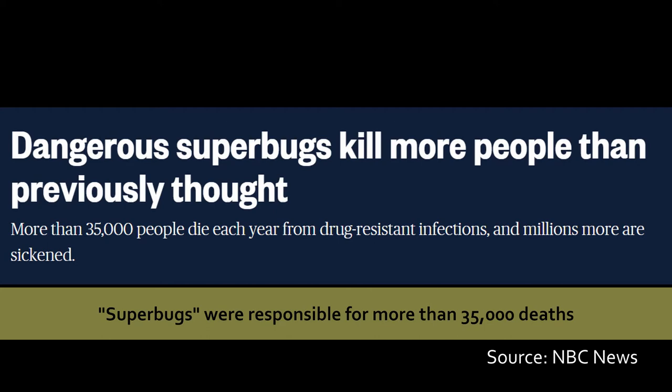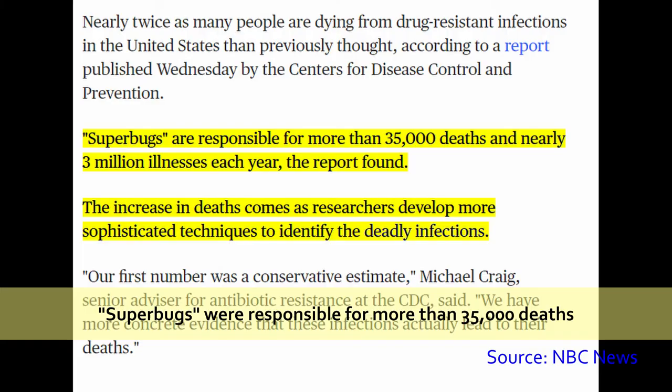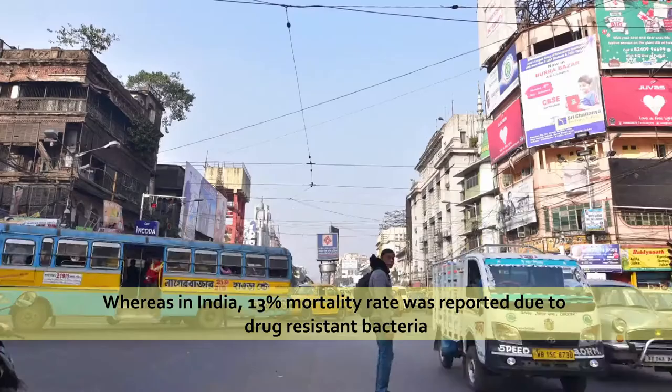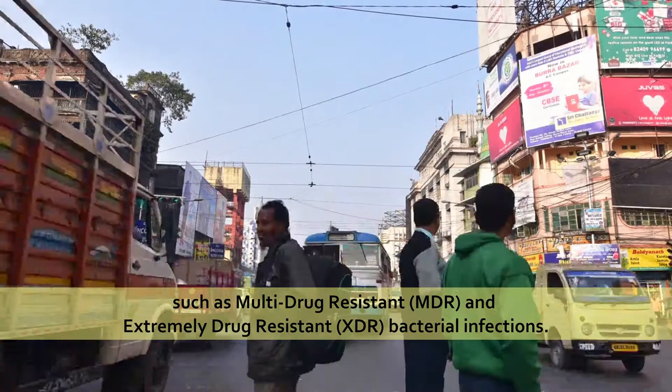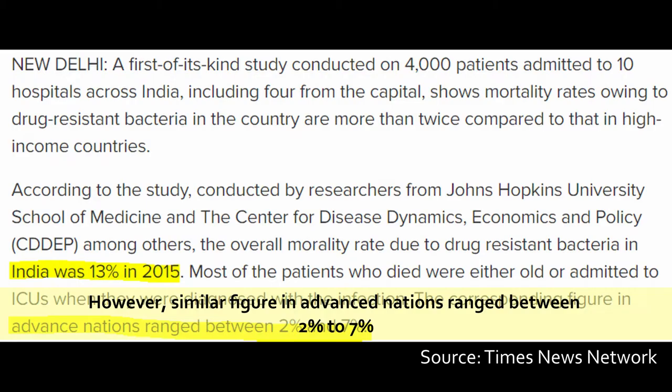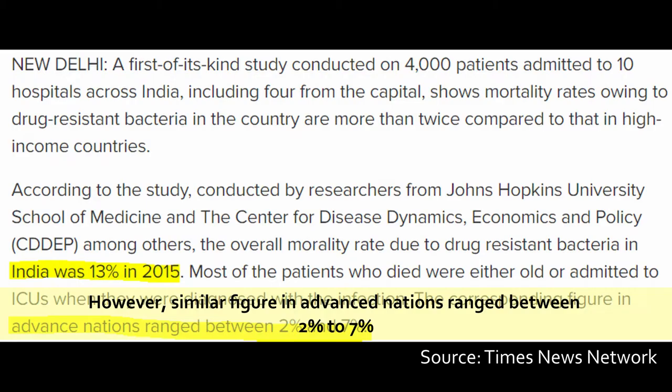So how deadly are superbugs? As per a study conducted by the Centers for Disease Control and Prevention in 2019, superbugs were responsible for more than 35,000 deaths and nearly 3 million illnesses each year within the United States. In India, a 13 percent mortality rate was reported due to drug-resistant bacteria, such as multi-drug resistant and extremely drug-resistant bacterial infections, whereas similar figures in advanced nations range between two percent to seven percent.